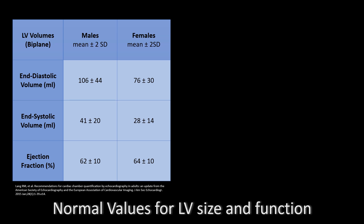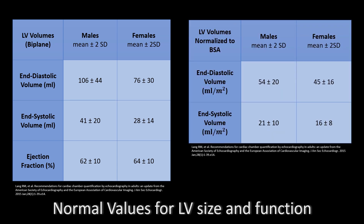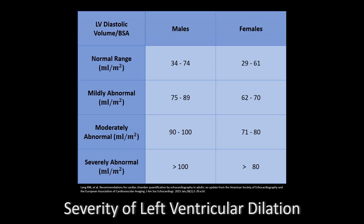In general, it is good practice to avoid making clinical decisions based on absolute values. Instead, it is better to index them to body surface area. The table on the right has the indexed values. For the severity of left ventricular dilation, note that these values are indexed to body surface area and show gender differences. For example, left ventricular dilation is defined as more than 100 cc per meter squared in males and more than 80 cc per meter squared in females.